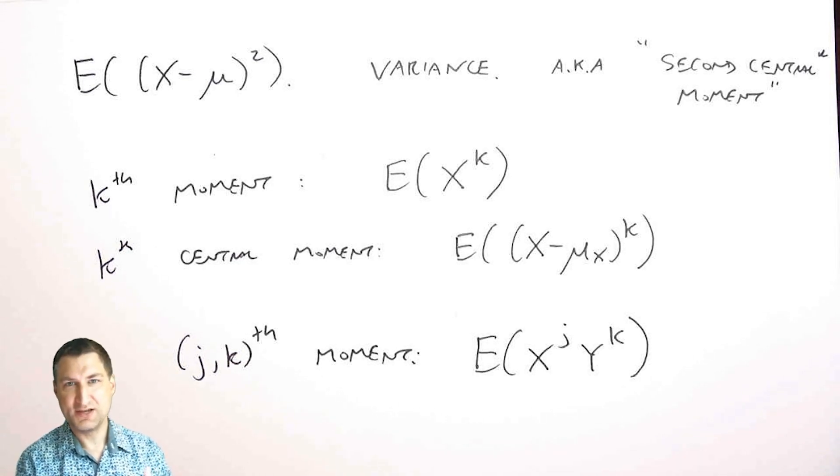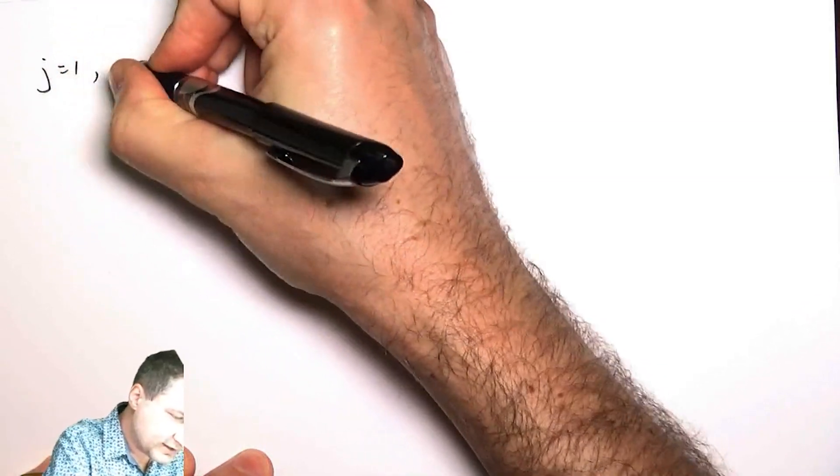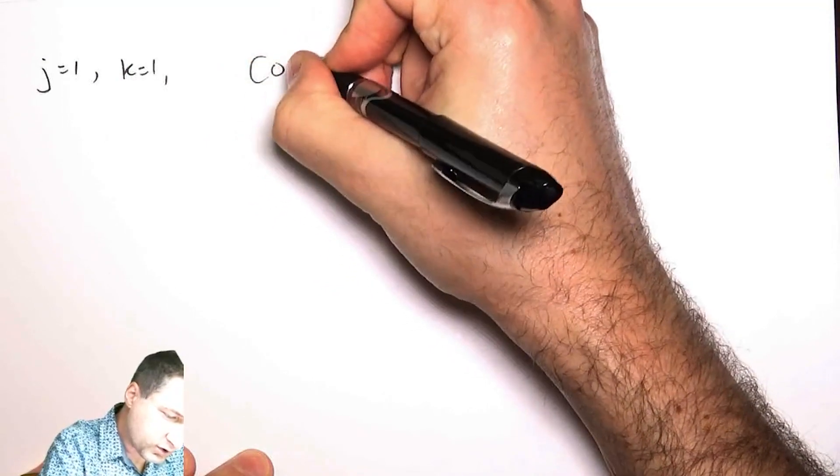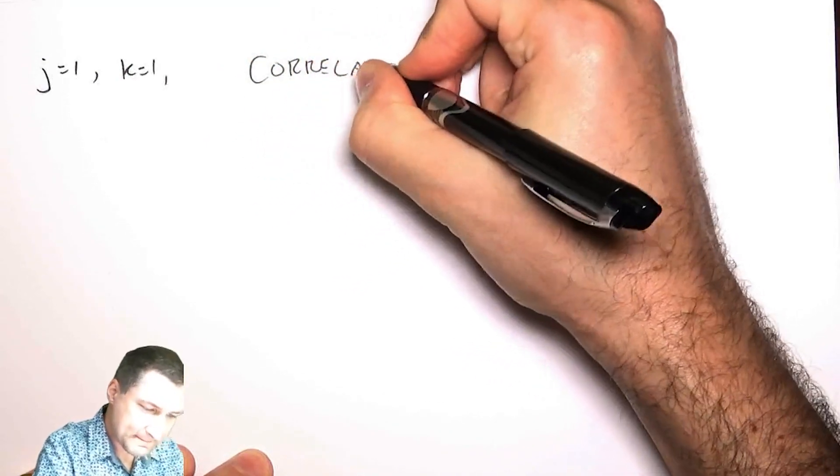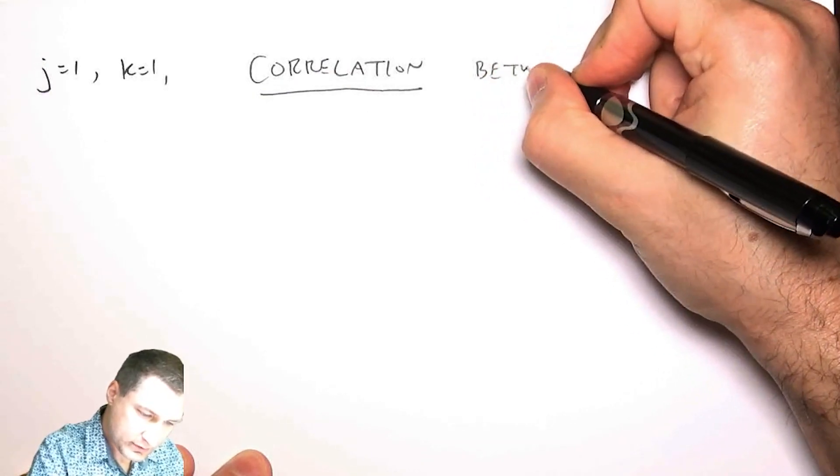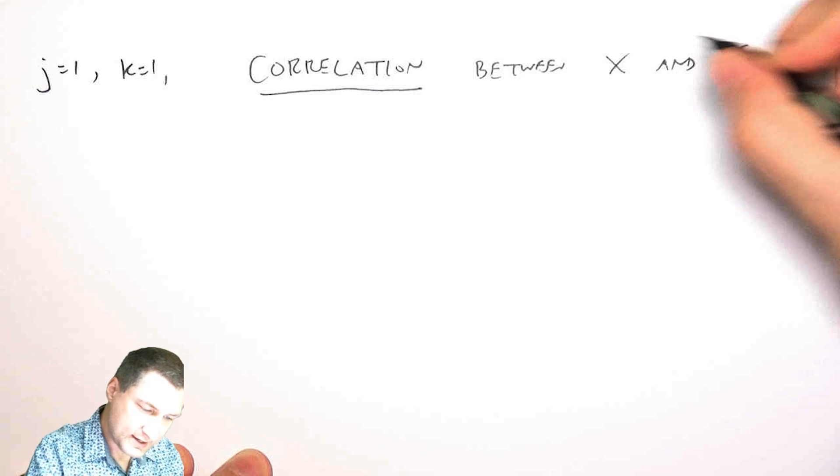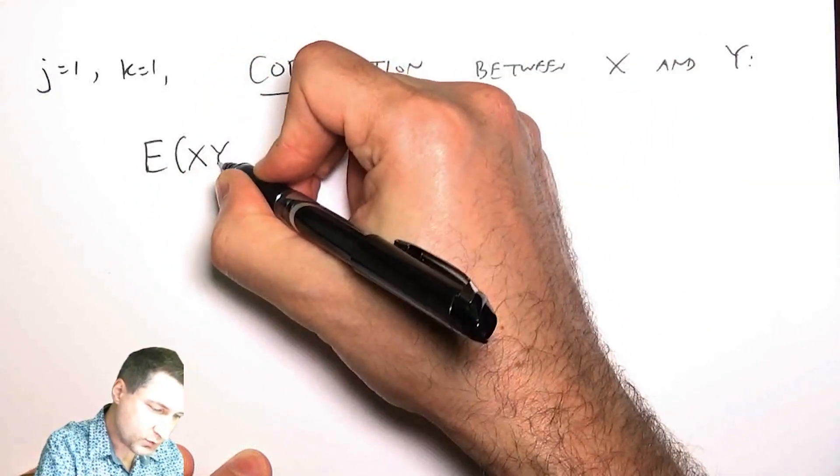Now, these moments give us some sense about how X and Y are related to each other. And that's what the topic of this lesson and the next one is going to be about. But there's really one that we care about a lot, and that is called the correlation. With j equals one and k equals one, we get the correlation between X and Y.